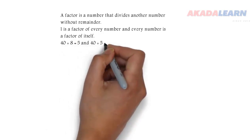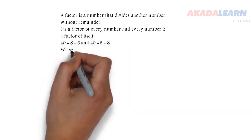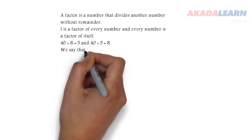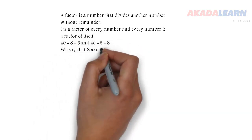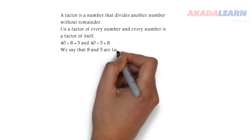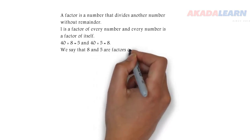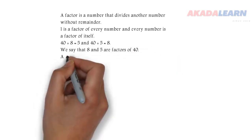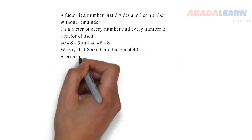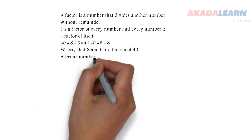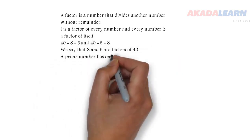40 divided by 8 is 5. 40 divided by 5 is 8. We say that 8 and 5 are factors of 40.